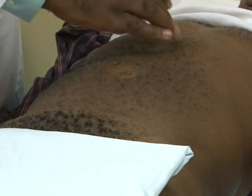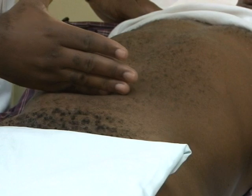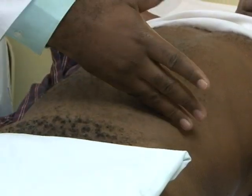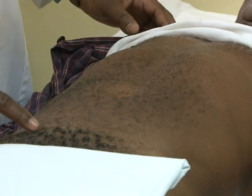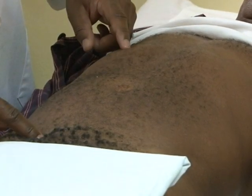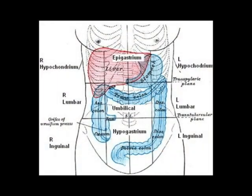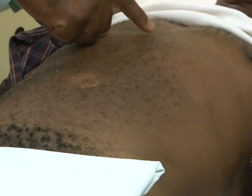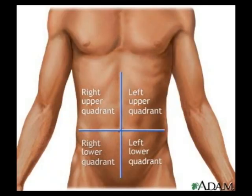The upper horizontal is the transpyloric plane. The lower horizontal passes through the upper borders of the iliac crest. The sagittal planes are identified by a line drawn vertically from the mid-inguinal point to the mid-clavicular point. Another way of dividing the abdomen is using a horizontal and a vertical line drawn through the umbilicus, resulting in right and left upper and lower quadrants.